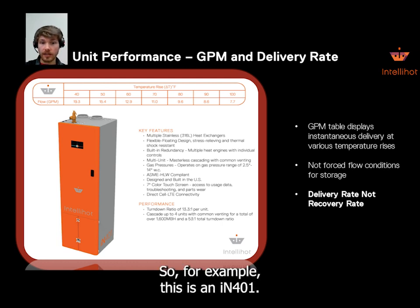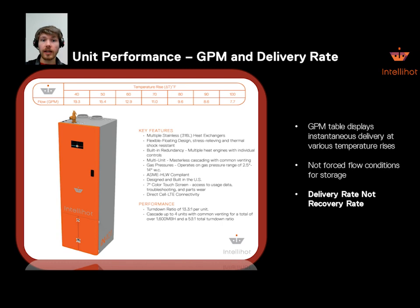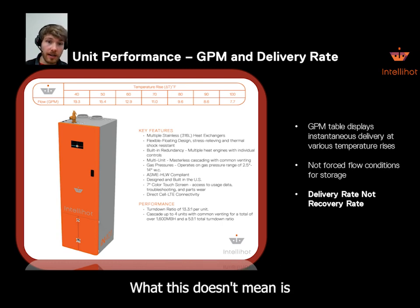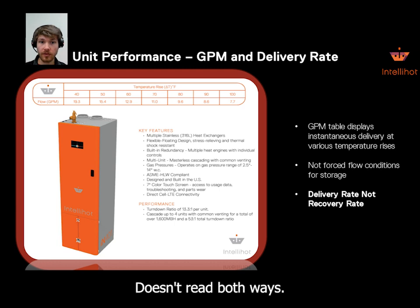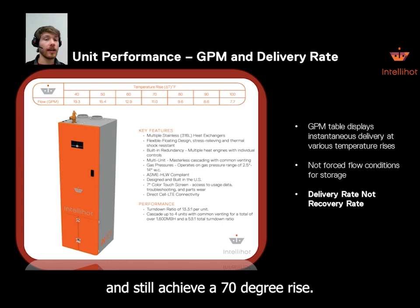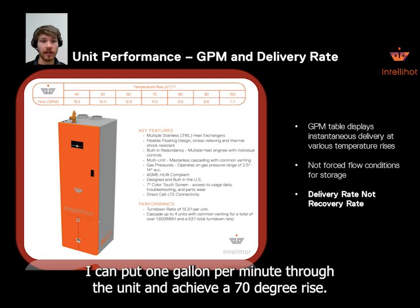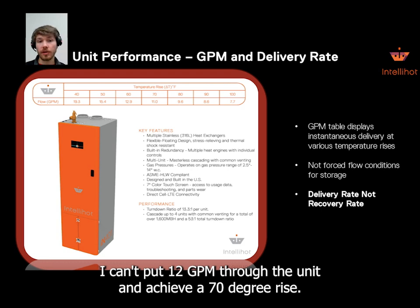For example, this is an IN-401. On an IN-401 for a 70-degree rise in temperature, I can put 11 gallons per minute through the unit. What this doesn't mean is that I have to put 11 GPM through the unit to get a 70-degree rise — it's not the same thing, it doesn't read both ways. I can put 5 gallons per minute, or even 1 gallon per minute, through the unit and still achieve a 70-degree rise. I can't put 12 GPM through the unit and achieve a 70-degree rise.